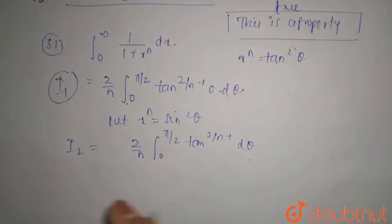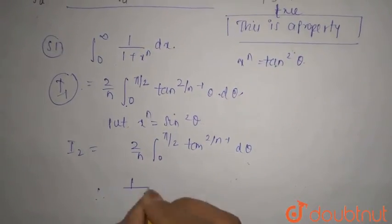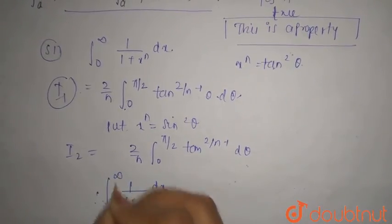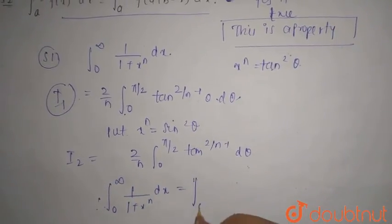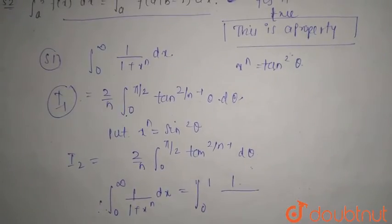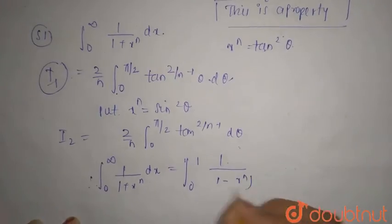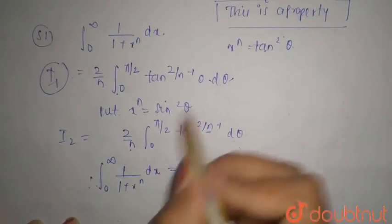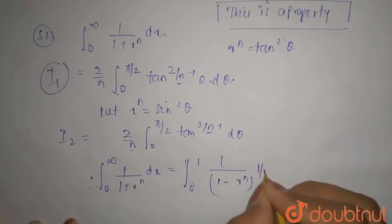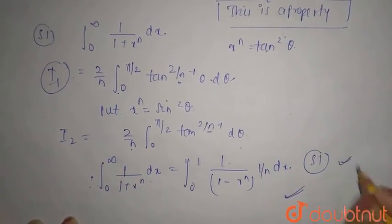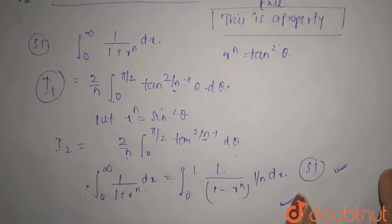So when you add it, then therefore integration 0 to infinity 1 upon 1 plus x^n dx is equal to integration 0 to 1, 1 upon 1 minus x^n. And here you can see that this 2 by n here also 2 by n, this will be 1 upon n dx. So you can see that statement 1 is also true. Statement 1, statement 2 both are true. Thank you.